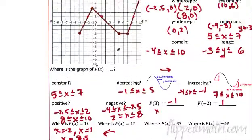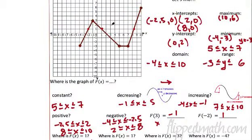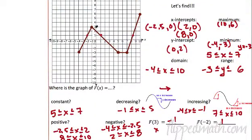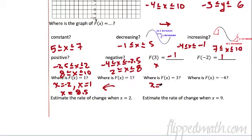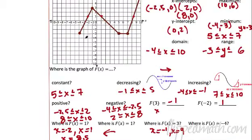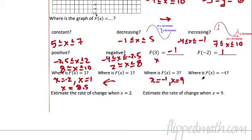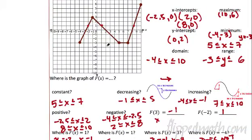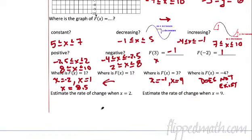Where does f of x equal three? We've got two places — remember, this is like the y. Where does y equal three? At x equals negative one and at x equals nine. And where does f of x equal negative four? Well, on this graph it does not exist. Why does it not exist? There's nowhere it equals negative four — negative four is down here, no part of the graph is at negative four. So I don't have to do that one.